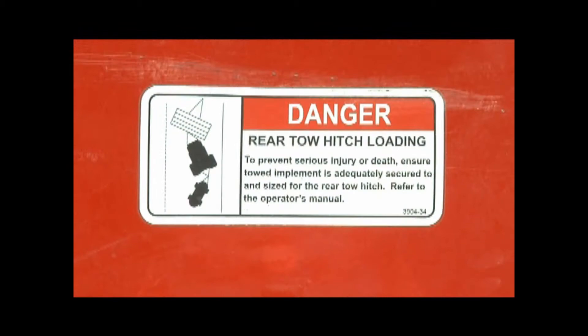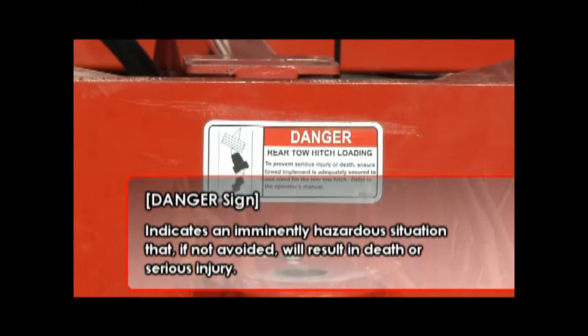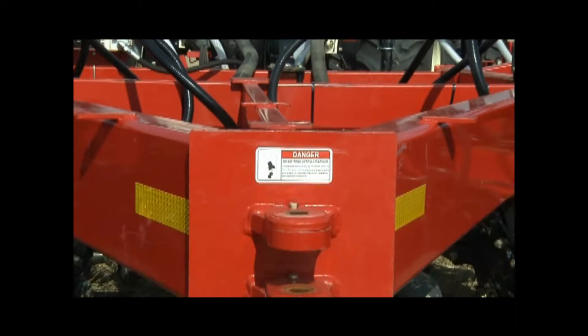Safety signs on the unit are categorized into three groups: danger, warning, and caution. The danger sign has white letters on a red background. It indicates an imminently hazardous situation that, if not avoided, will result in death or serious injury.